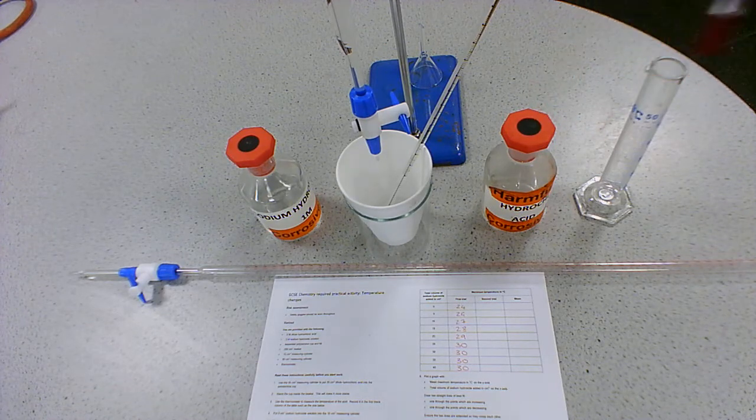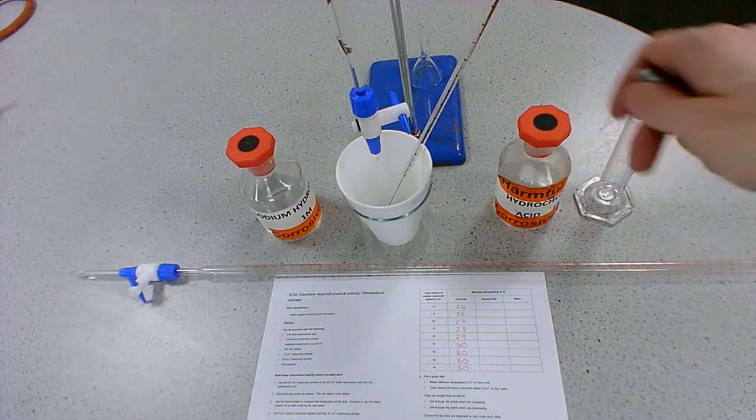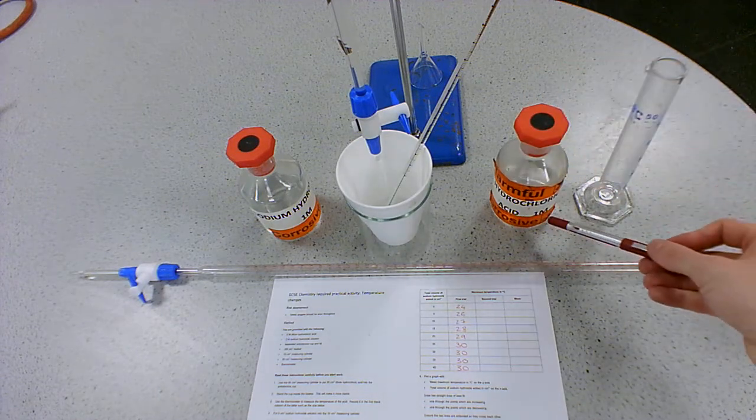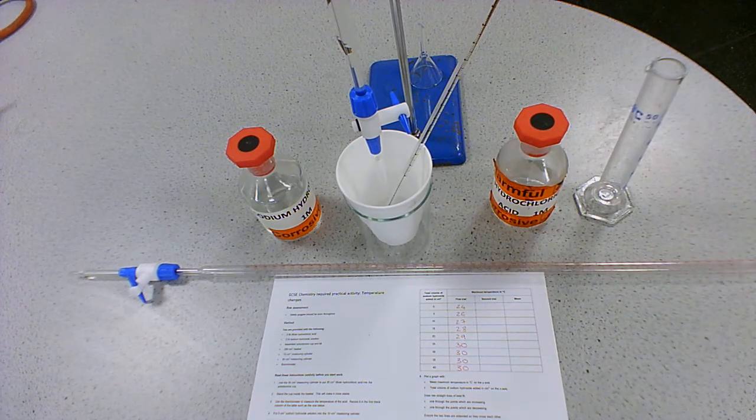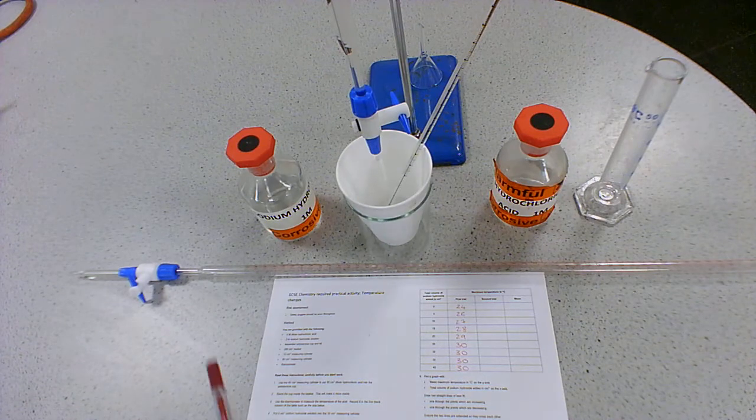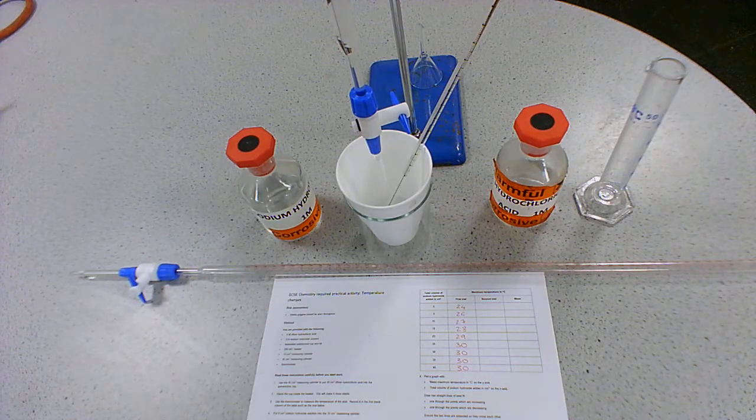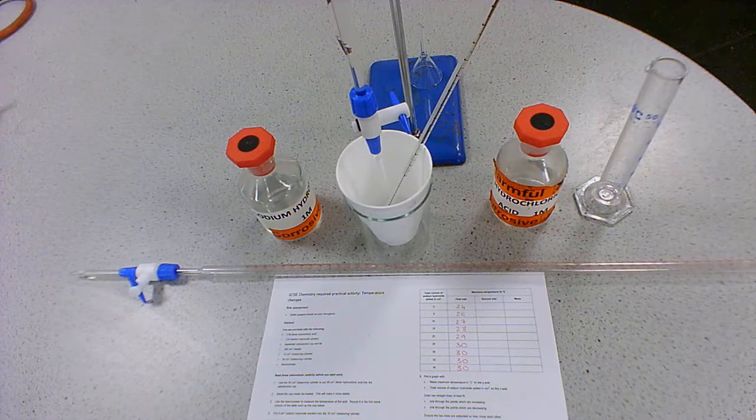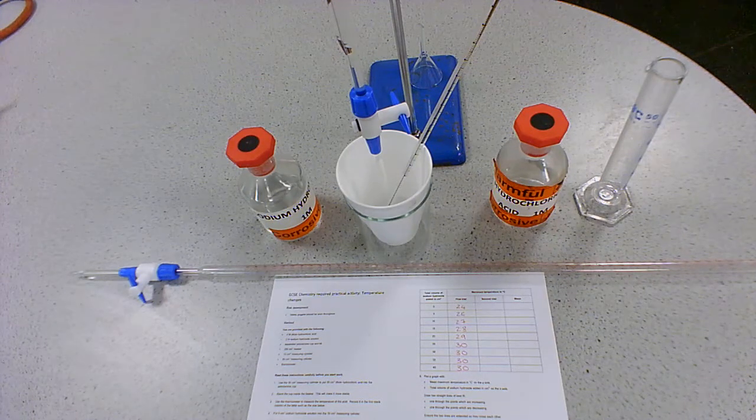So that's our hydrochloric acid measured out using a measuring cylinder so we know exactly how much is in there. And we also know what the concentration is. I'm using one molar hydrochloric acid. And what we're going to do is add sodium hydroxide. We're going to add it bit by bit. Measure the temperature change after each addition. And then we're going to plot a graph. And I'll explain that all in a minute.